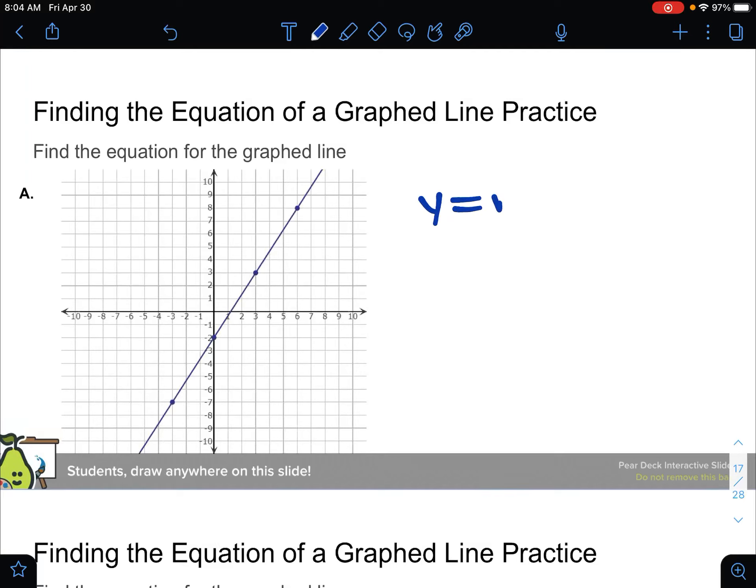All equations of lines are of the form y equals mx plus b, where m is the slope and b is the y-intercept.